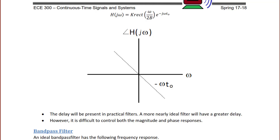However, it is difficult to control both the magnitude and phase responses. If the delay is small, then there will be a distortion in the frequency domain because it will be a convolution of a sinc with the ideal low-pass filter, and what you would see is something like this.